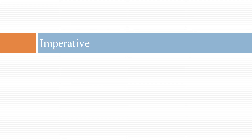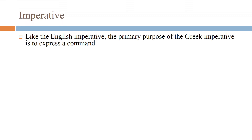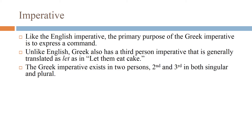We're going to look at the imperative. Like the English imperative, the primary purpose of the Greek imperative is to express a command. Unlike English, which has the imperative only in the second person ('do,' 'you do'), Greek also has a third person imperative generally translated as 'let,' as in 'let them eat cake.' The Greek imperative exists in two persons — the second and the third — in both singular and plural. The voices are active, middle, and passive.